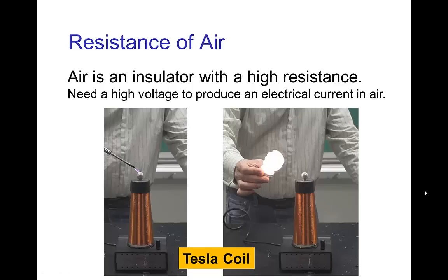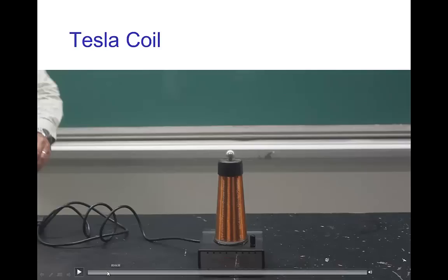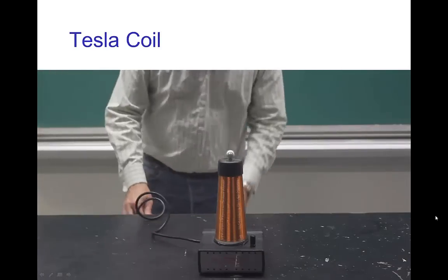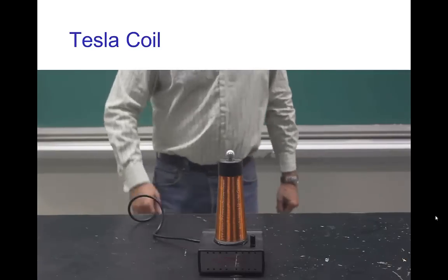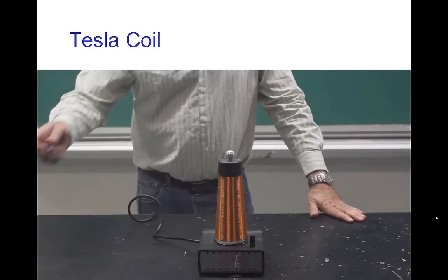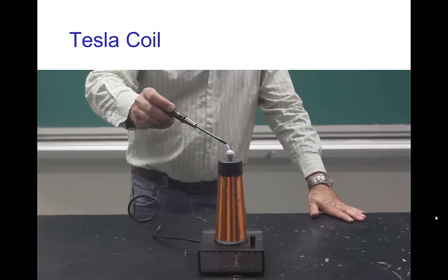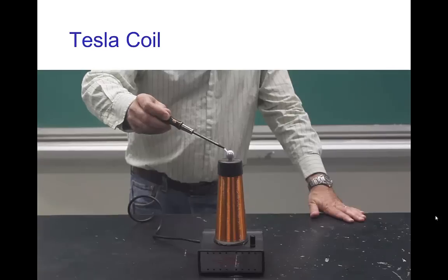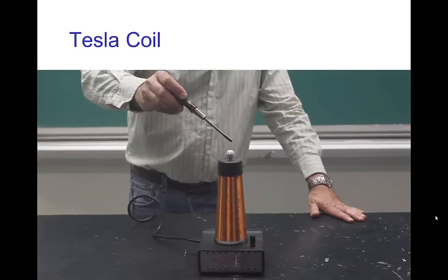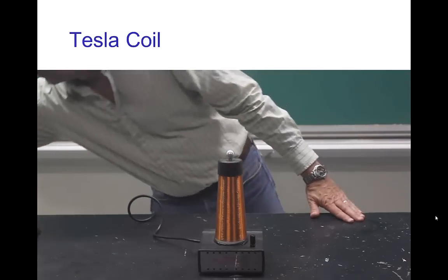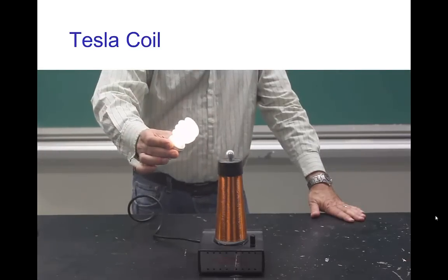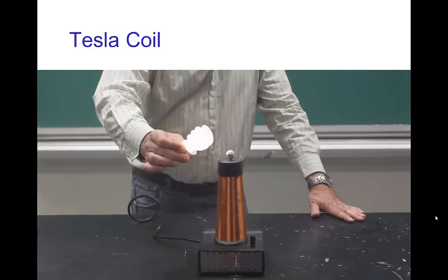Air is an insulator that has rather high resistance, so in order to get a current traveling through the air, we need a large amount of voltage. We saw that with the Van de Graaff generator in another tutorial, but another device that produces a high voltage is a Tesla coil. The top of the Tesla coil has a high voltage — you see the current traveling, actually visible through the air. This light bulb lights up even though you don't visibly see a spark traveling.